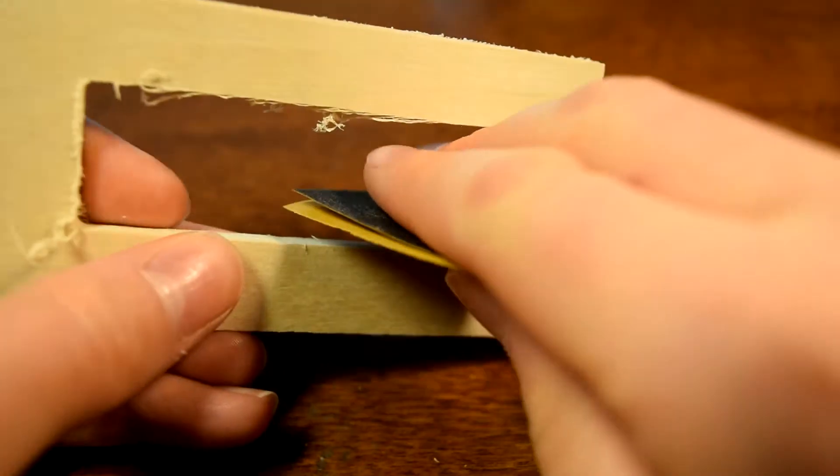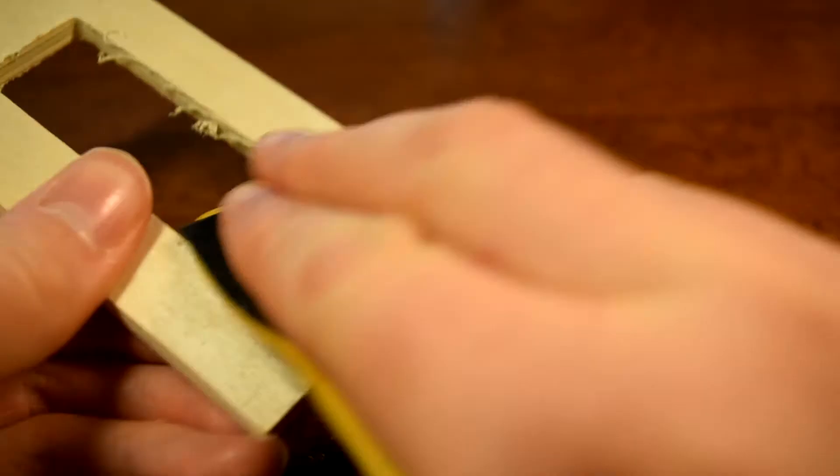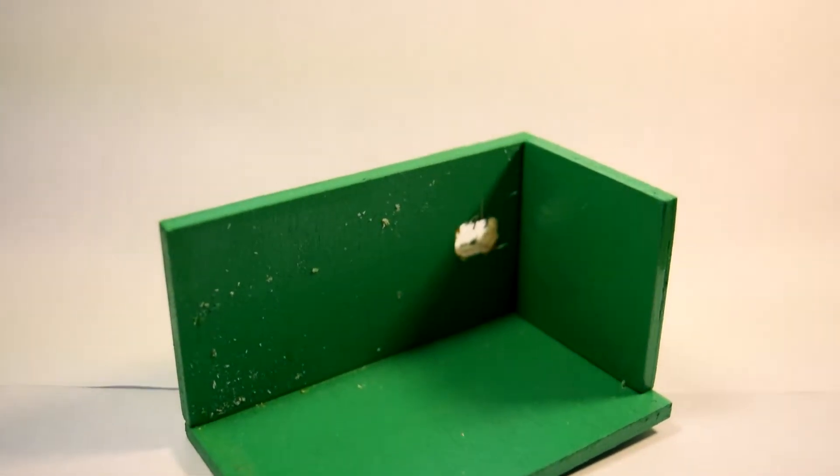I started by thoroughly sanding each part, gradually using increasingly finer grit sandpaper. After I felt the sanding was sufficient, I glued the bottom, side, and back pieces together.